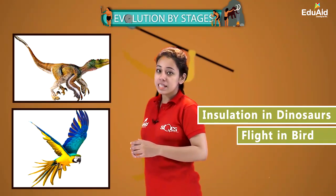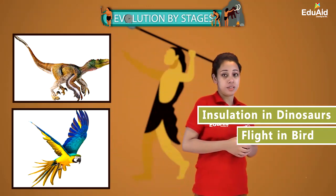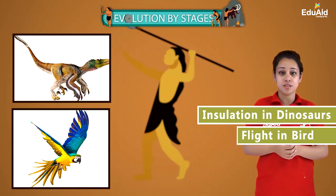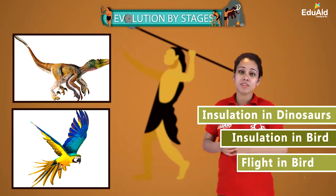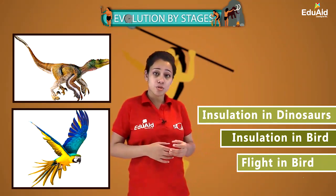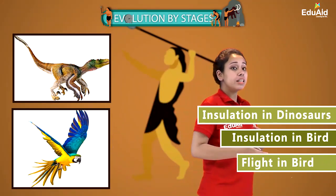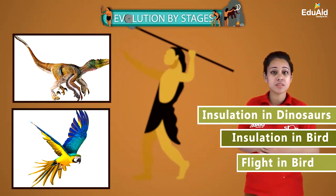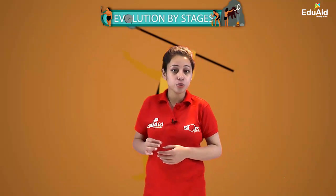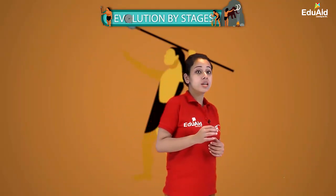So we can see that feathers in the case of dinosaurs served only one function, but in the case of birds, they served two functions — that is insulation and flight. So we can say that in dinosaurs, the feathers got modified and provided a completely different function in the case of birds. And so we can conclude that birds have evolved from dinosaurs, which is a reptile.